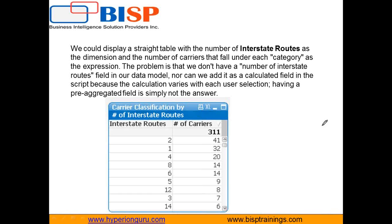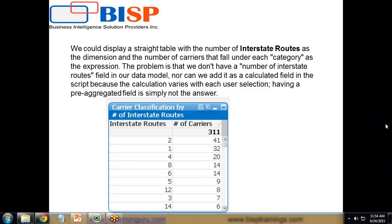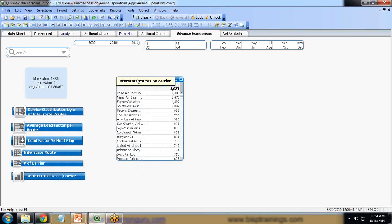We don't have the number of interstate routes field in our data model, nor can it be added as a calculated field in the script because the calculation varies with each user's selections. So we cannot specify a query in the script either. What we need to do is convert the expression into a dimension using the AGGR function.